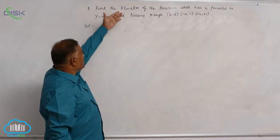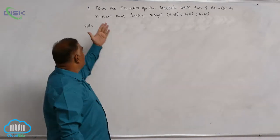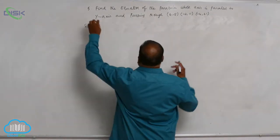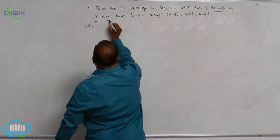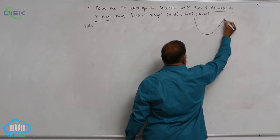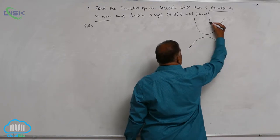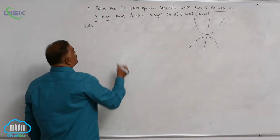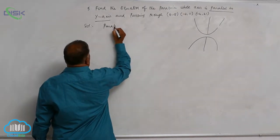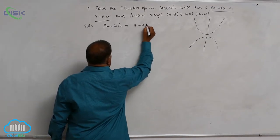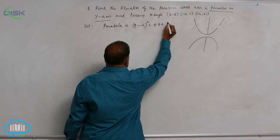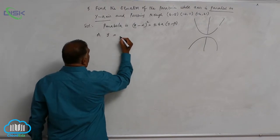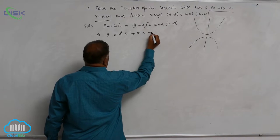Let us discuss one more problem. Find the equation of the parabola whose axis is parallel to y-axis and passing through three points. Since the axis is parallel to y-axis, the parabola can open upward or downward. In both cases, the parabola's axis is always parallel to y-axis. So the parabola is given by x minus alpha whole square equals plus or minus 4a into y minus beta, which simplifies to y equals lx squared plus mx plus n.